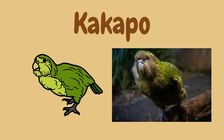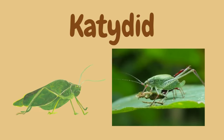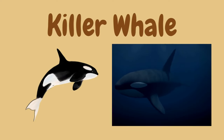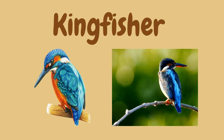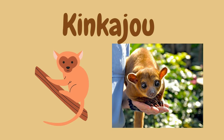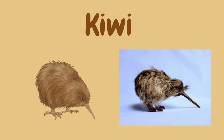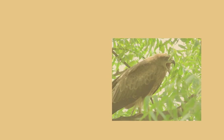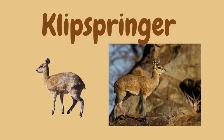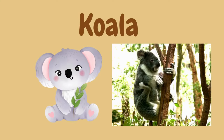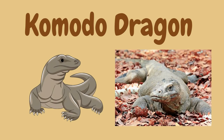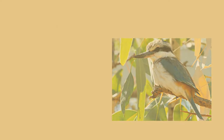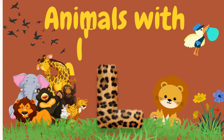Animals with Alphabet K. Kangaroo. Killer Whale. Kingfisher. Kiwi. Kite. Klipspringer. Koala. Komodo Dragon. Kookaburra. Kudu.